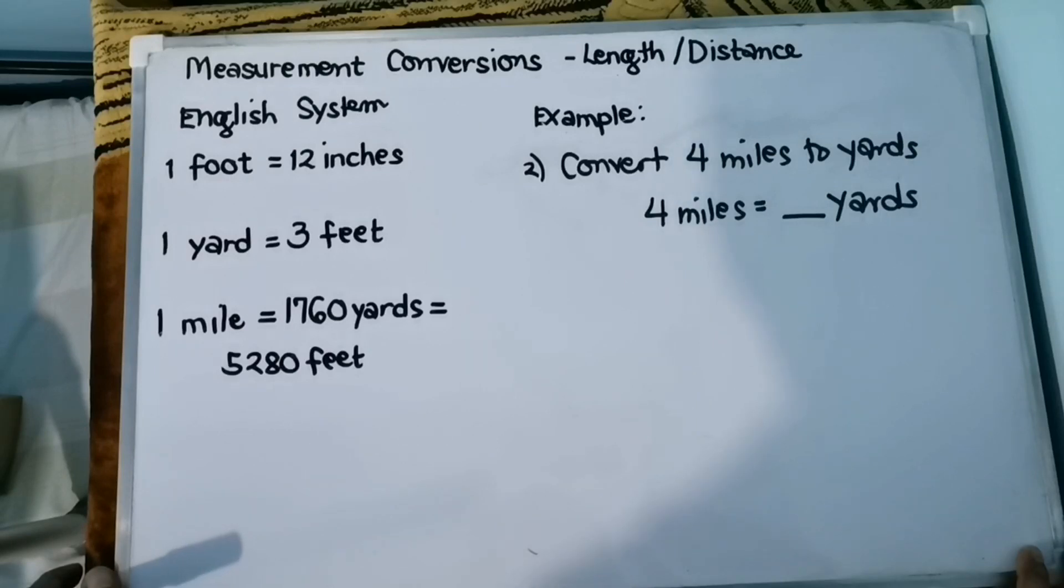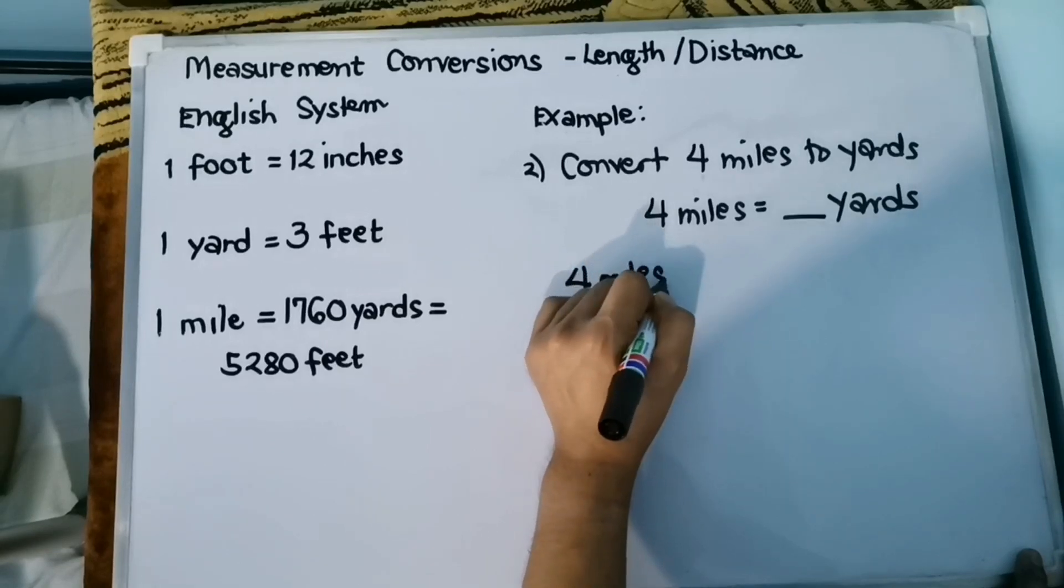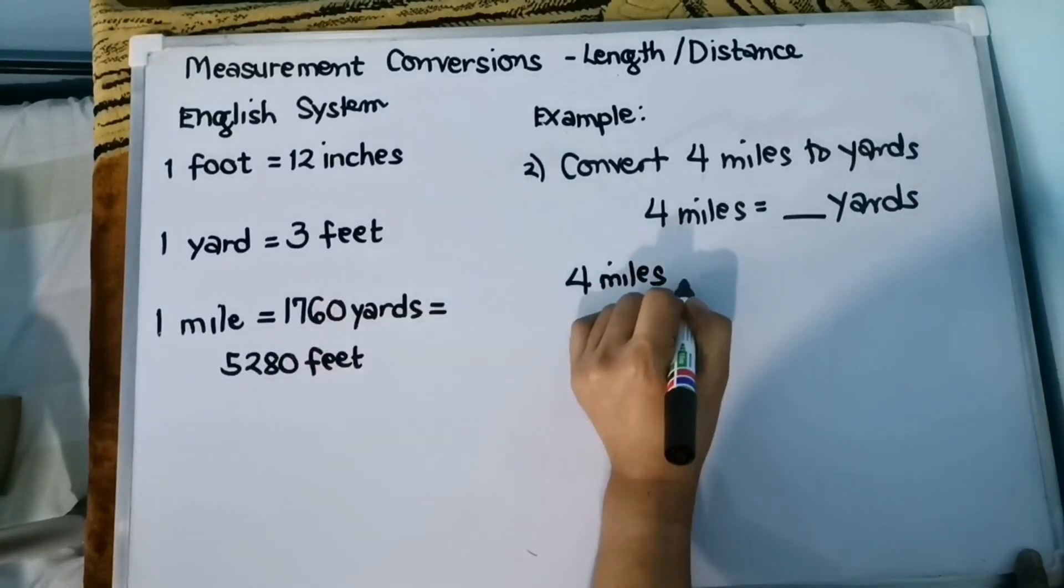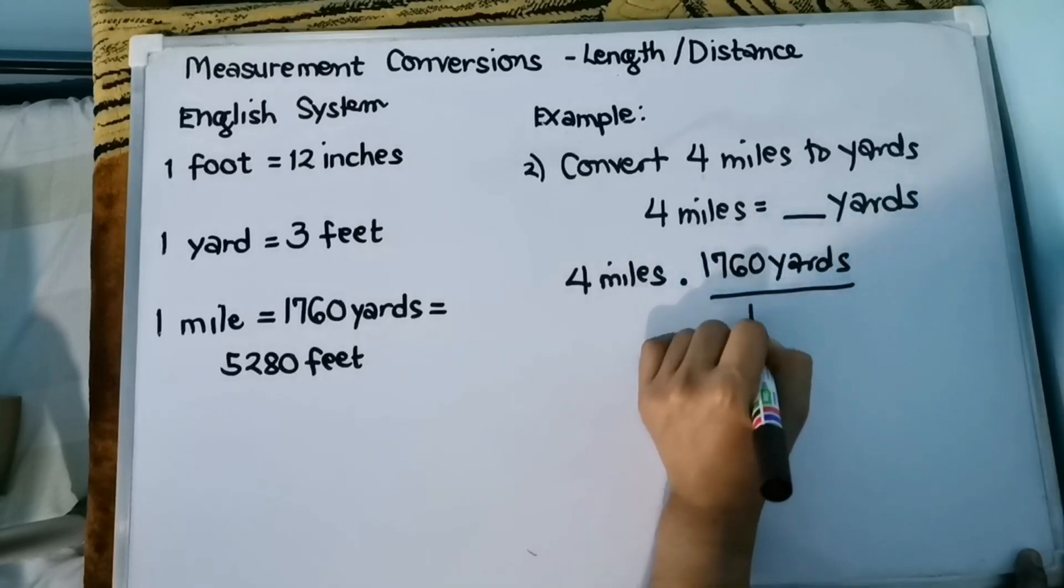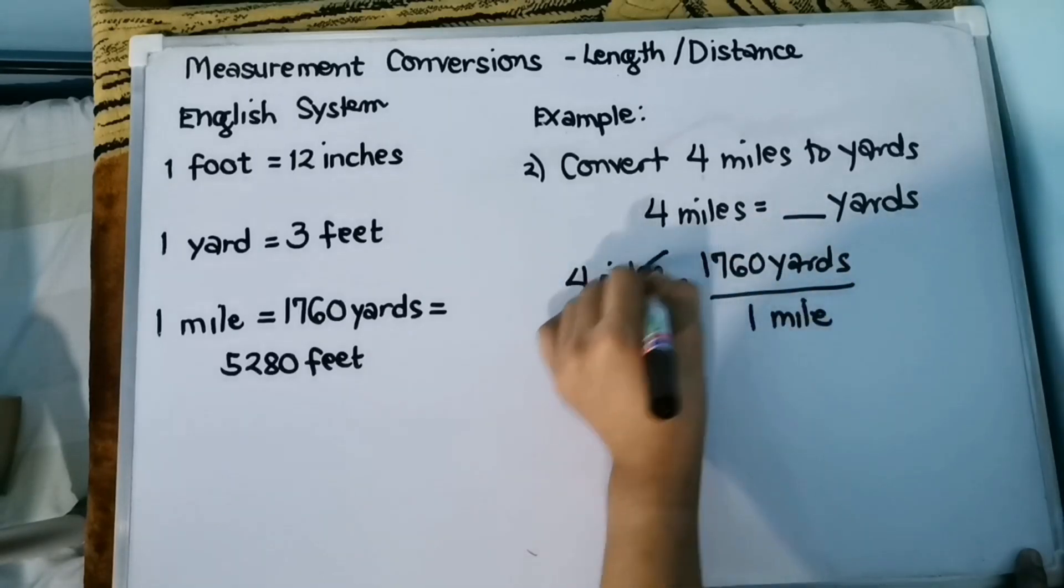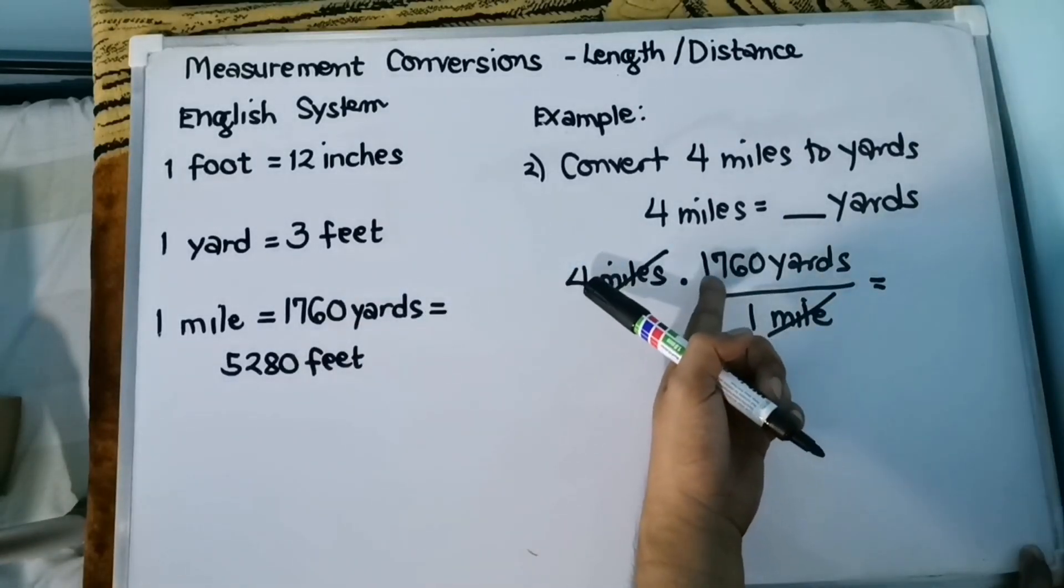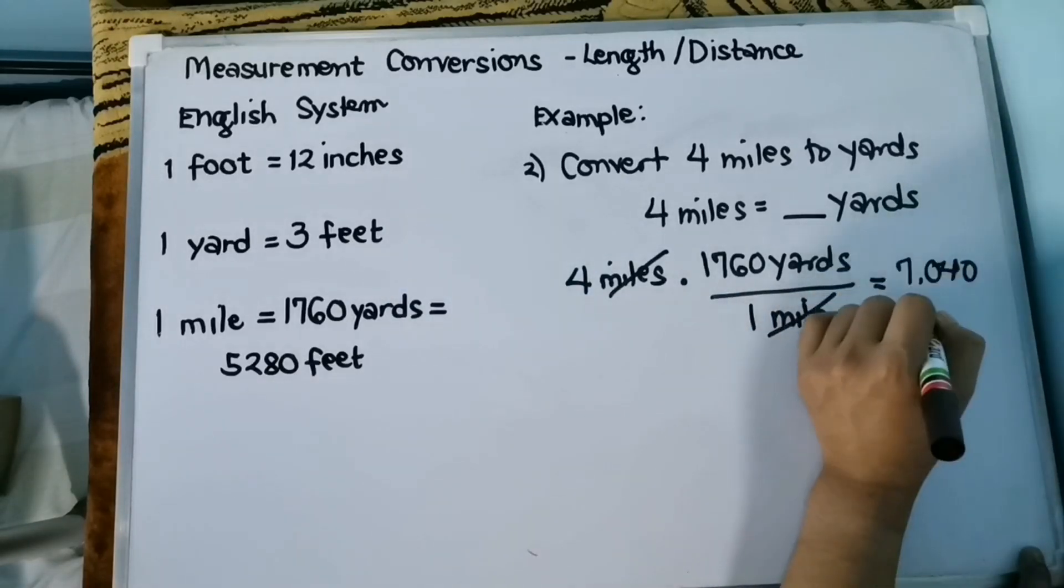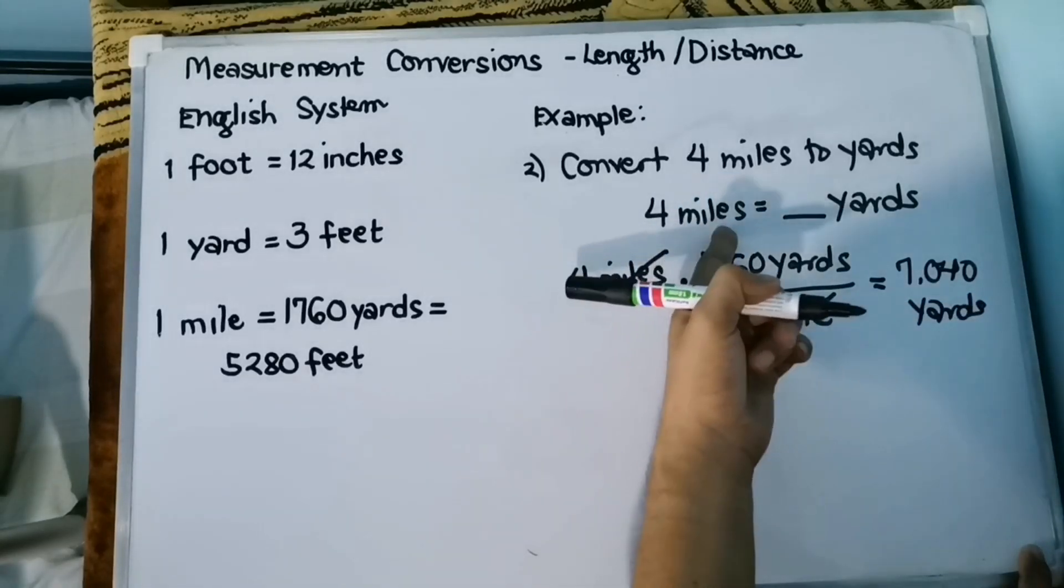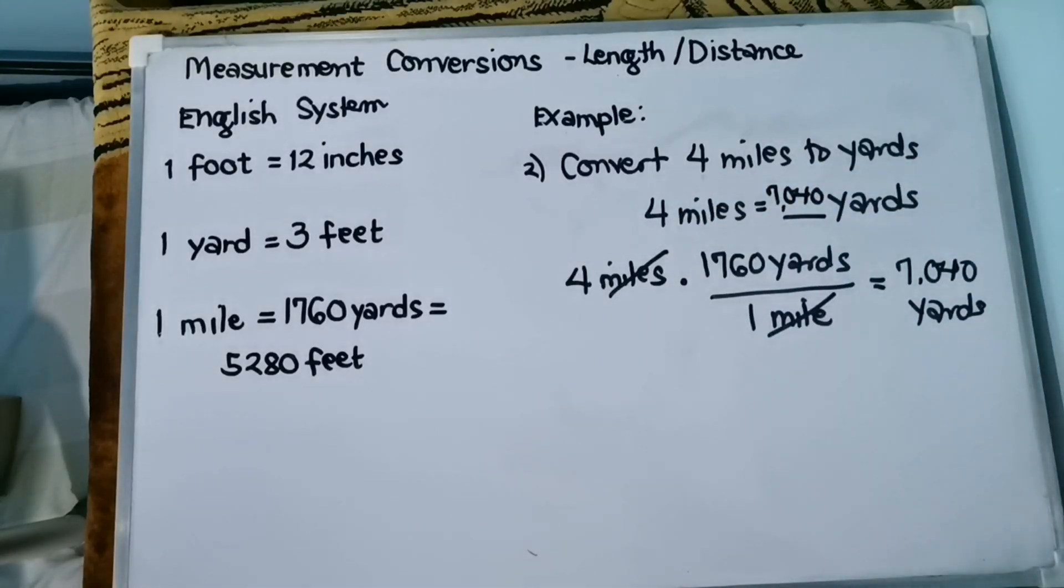And then since what you need is the yard unit, it should be placed in the numerator, so the other unit will be cancelled as you multiply. So that is 4 miles times 1,760 yards over 1 mile. We can cancel it, and then multiply the numerator. So 4 times 1,760 yards gives us 7,040 yards. Therefore, 4 miles is equivalent to 7,040 yards.